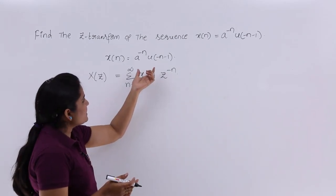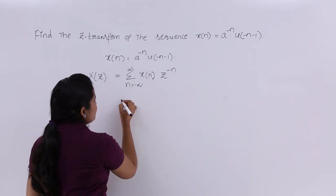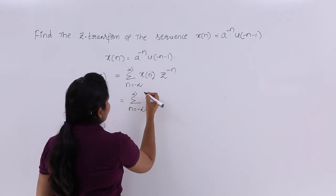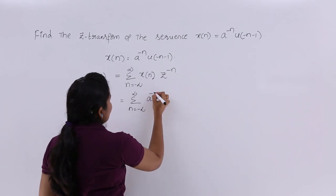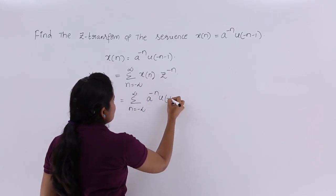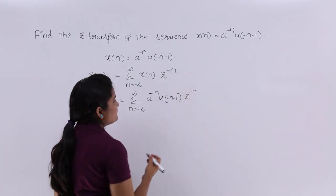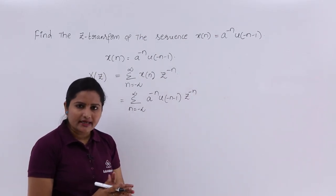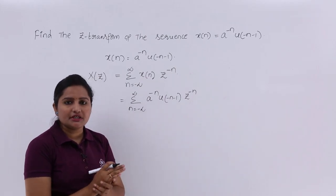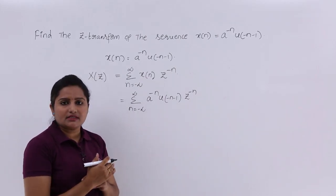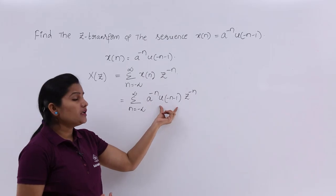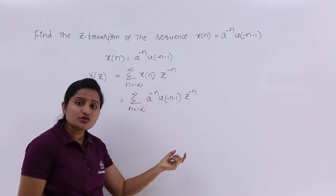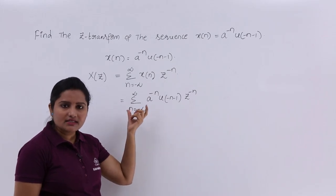The given x of n is this signal, and we substitute it into the summation from n equals minus infinity to infinity. In place of x of n, we substitute a power minus n times u of minus n minus 1, times z power minus n. Whenever you see a unit step function in a summation, it will limit the limits — that is, it will change the limits of the summation.